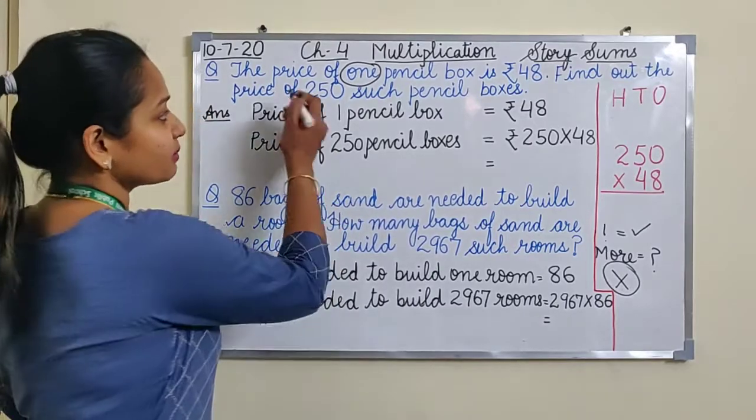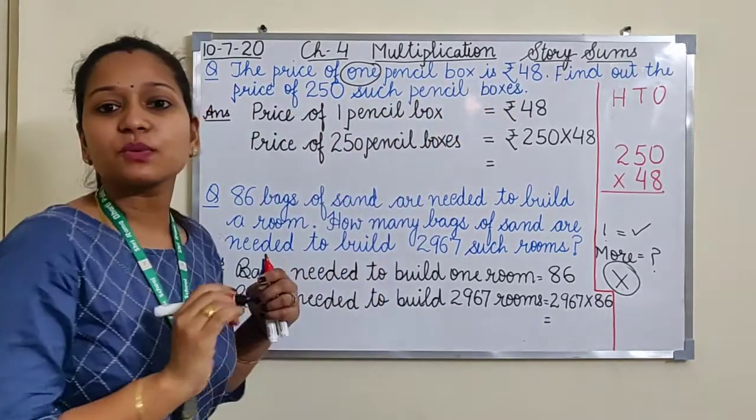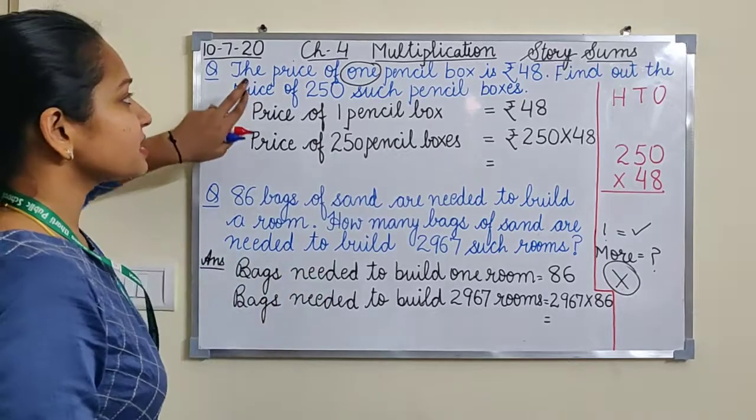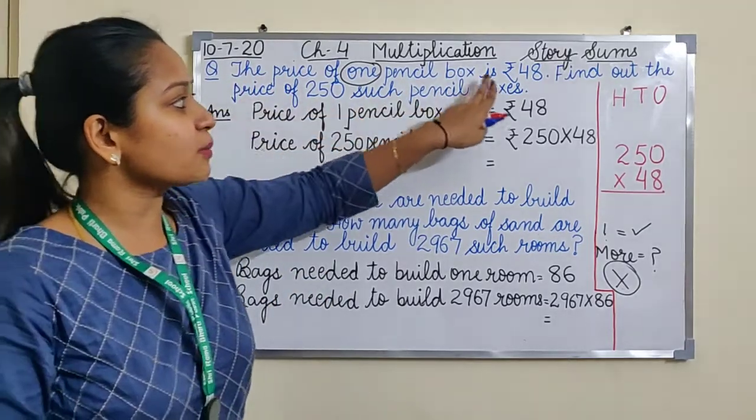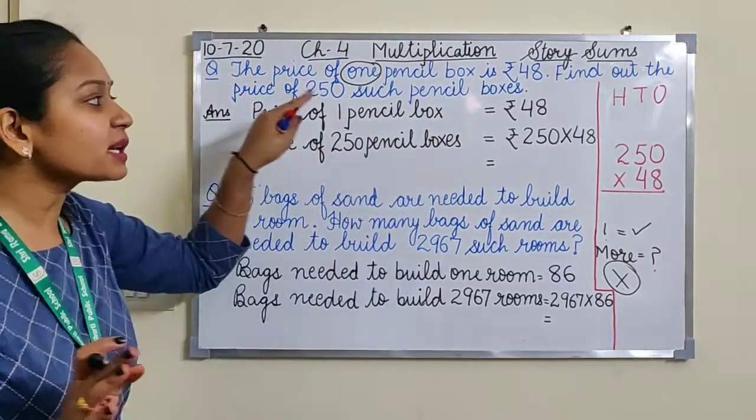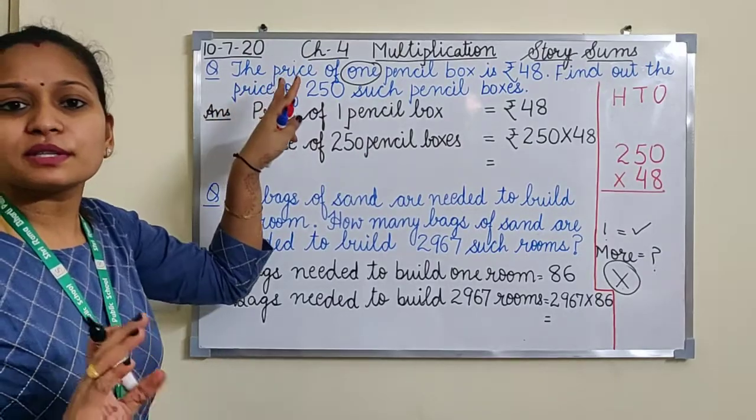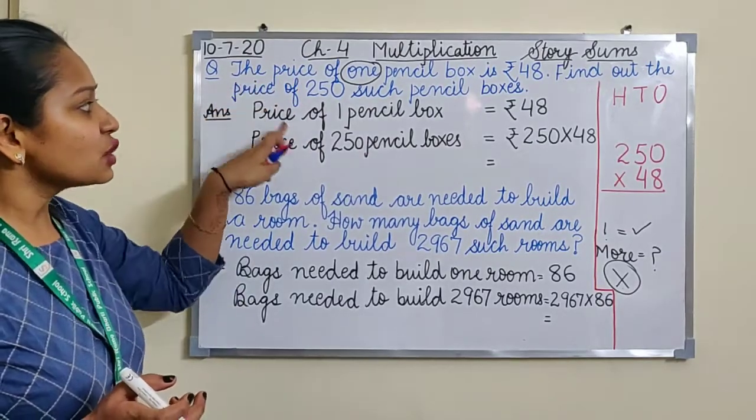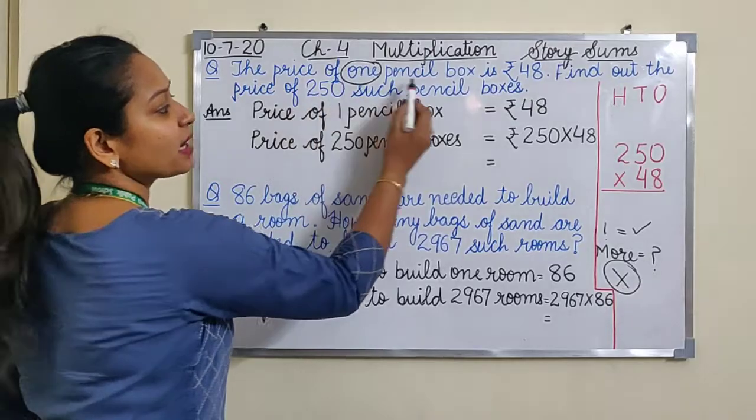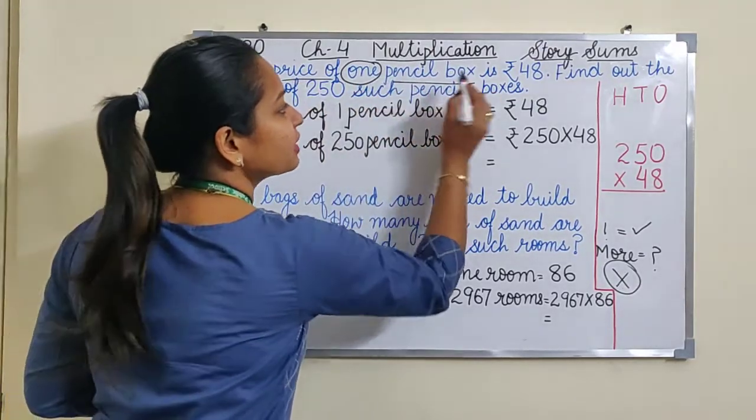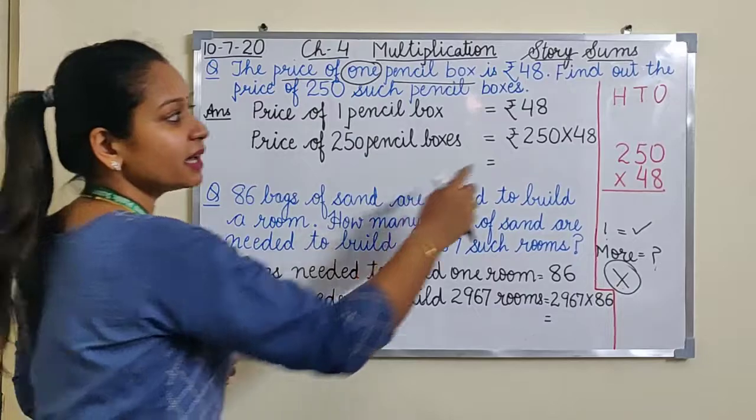So statements are the easiest part. Don't confuse yourself with statements. Every line has one statement hidden in it. The price of one pencil box is rupees this. So we will remove the simple words which are not necessary.